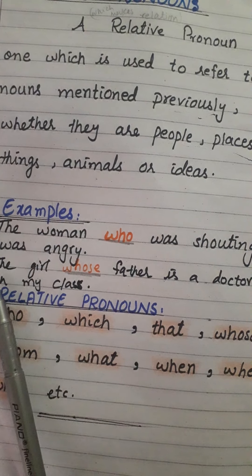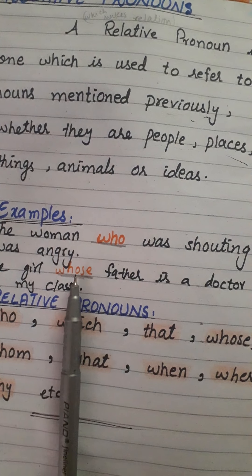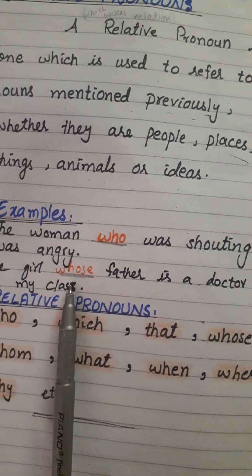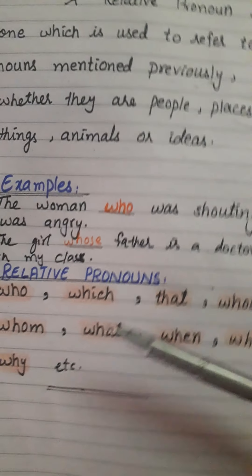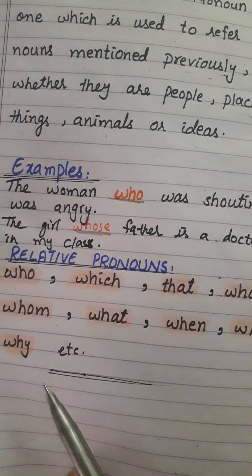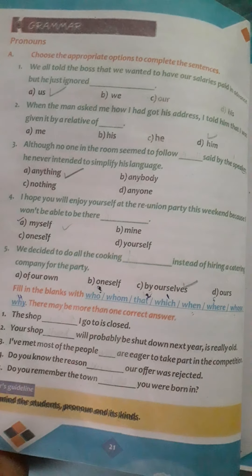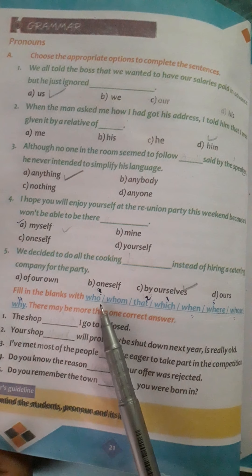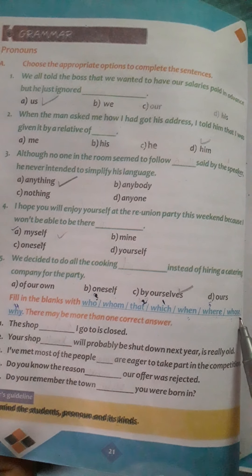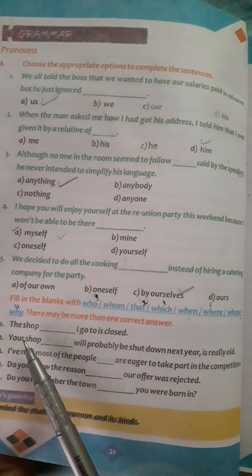Second example: 'The girl whose father is a doctor is in my class.' کیا ہے relative pronoun کونسا ہے؟ Whose. یعنی لڑکی جس کا father doctor ہے، وہ میری class میں ہے۔ Some relative pronouns are: who, which, that, whose, whom, what, when, where, why, etc. Now let's do the exercise of relative pronoun. There are some relative pronouns: who, whom, that, which, when, where, why. You have to fill in the blanks with the help of these relative pronouns.